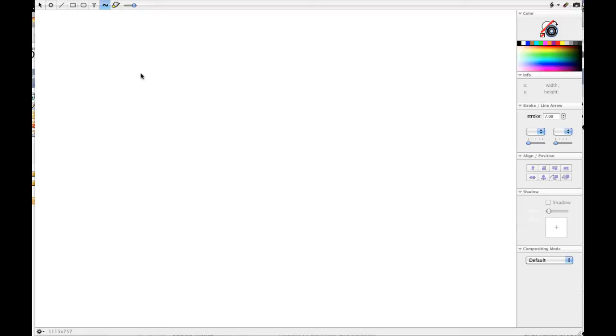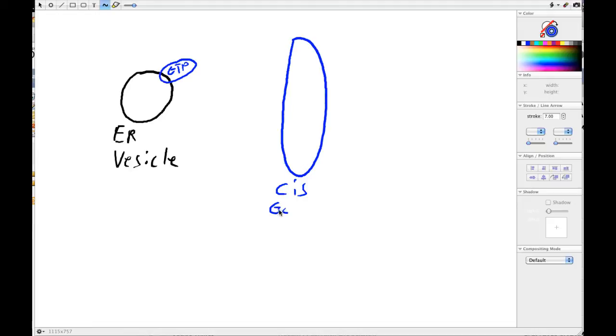So what we have is an ER vesicle, and we have a RAB GTPase loaded with GTP. It's on the ER vesicle. We also have the cis-Golgi, and it interacts via the RAB effector.